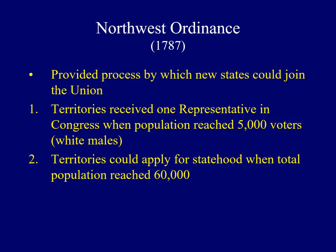Another successful land ordinance passed under the Articles was the Northwest Ordinance, which was important because it created the system whereby new states could be added to the Union. First, once a territory contained 5,000 voters — in this case white males — it could receive one non-voting member of Congress. Secondly, when a territory's total population reached 60,000, it could adopt a constitution and apply for statehood, which would put them on equal footing with other states.